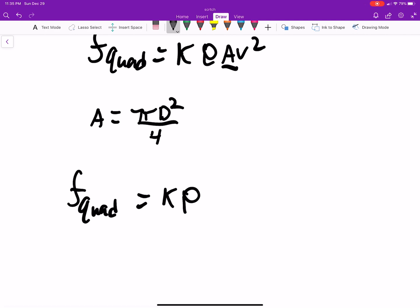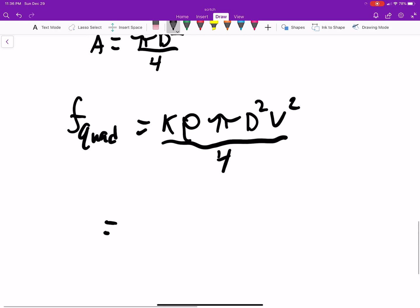And we can substitute that into here. So that simplifies it a little bit. So let's write all this out. Times π D squared V squared all over 4. Or I'm just going to rewrite it a little bit.